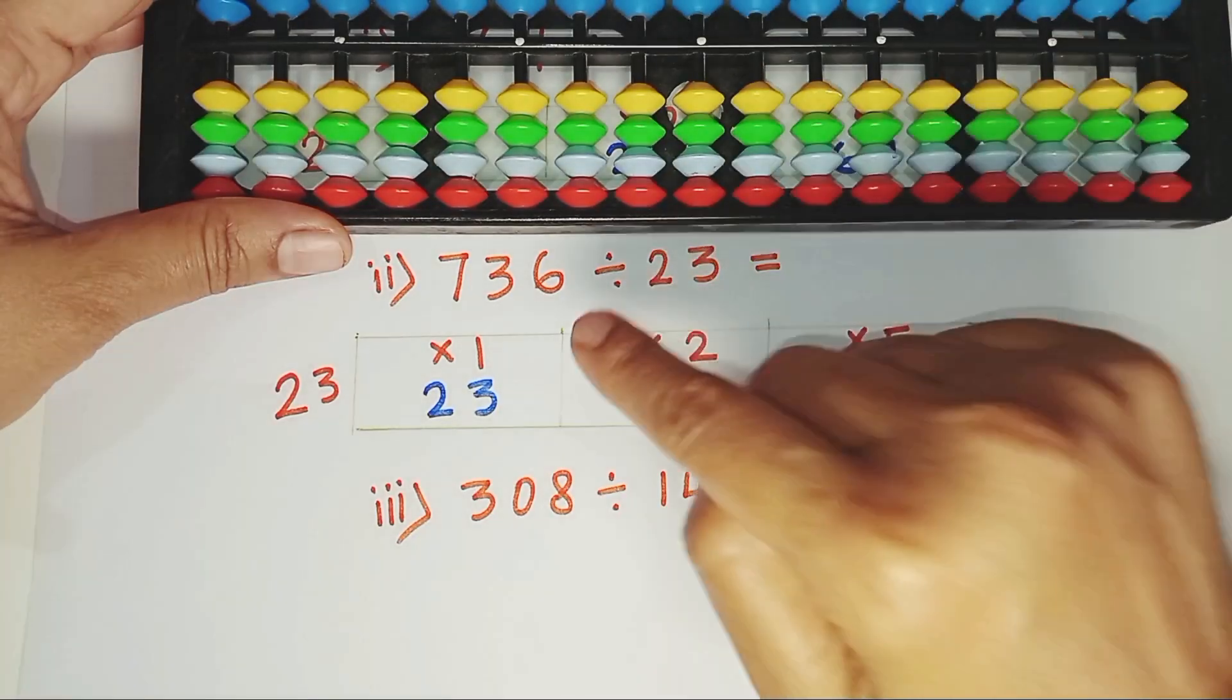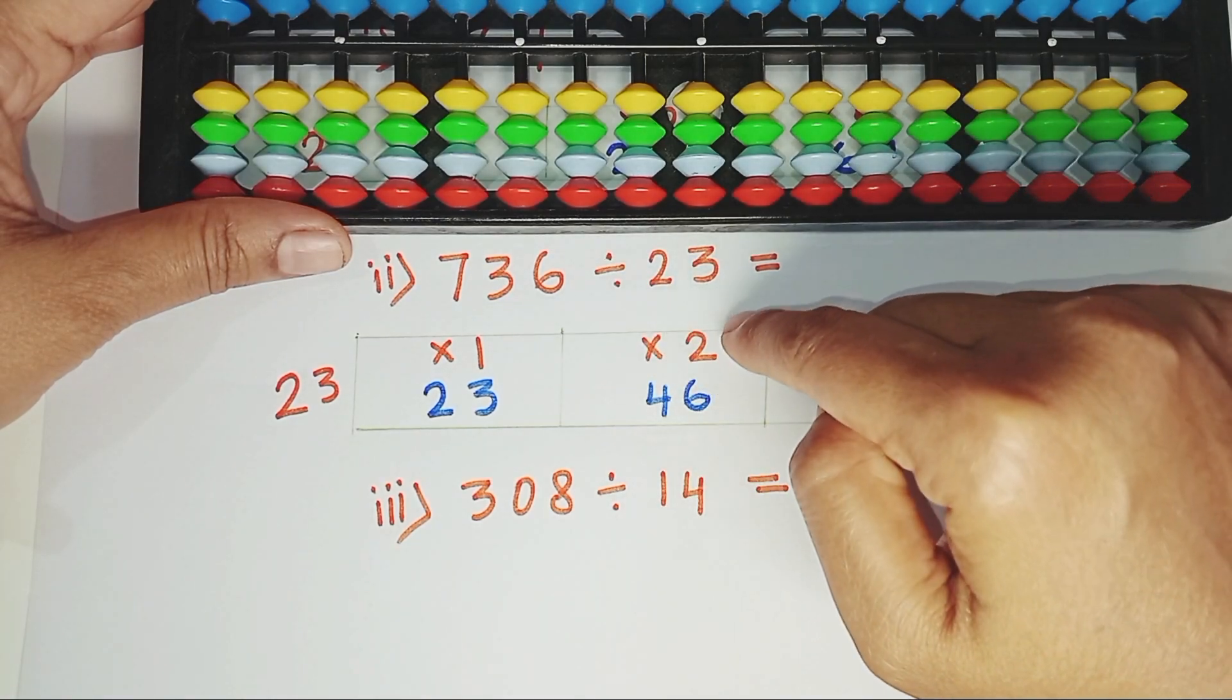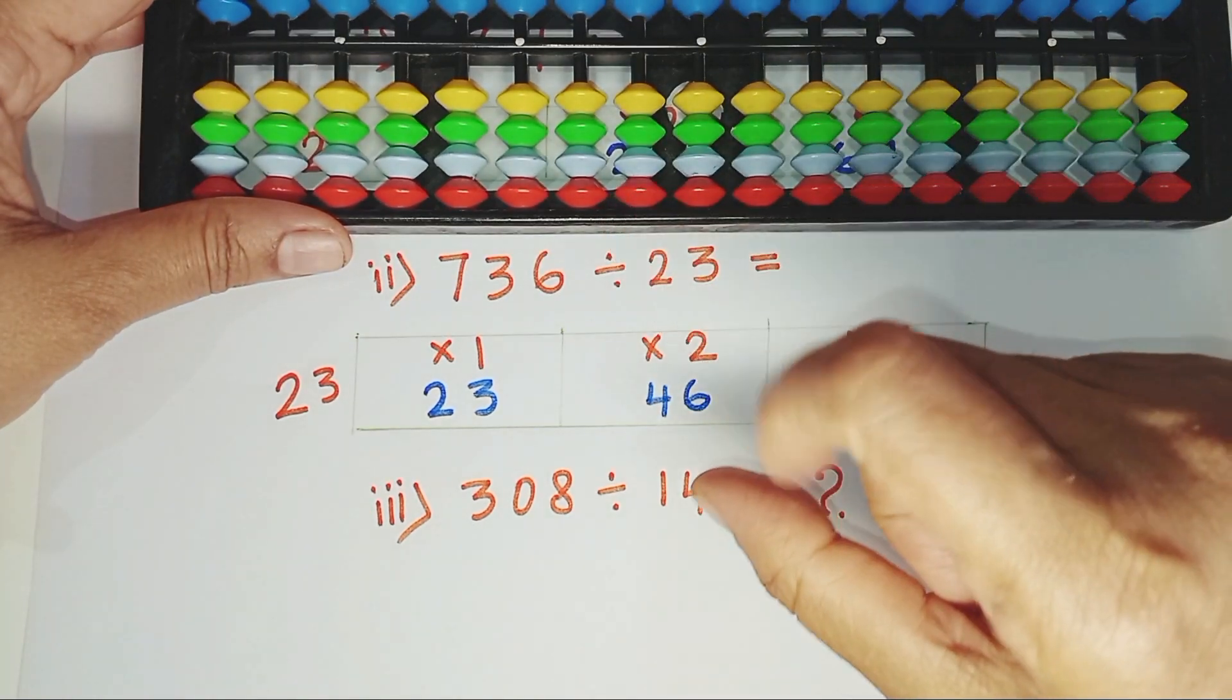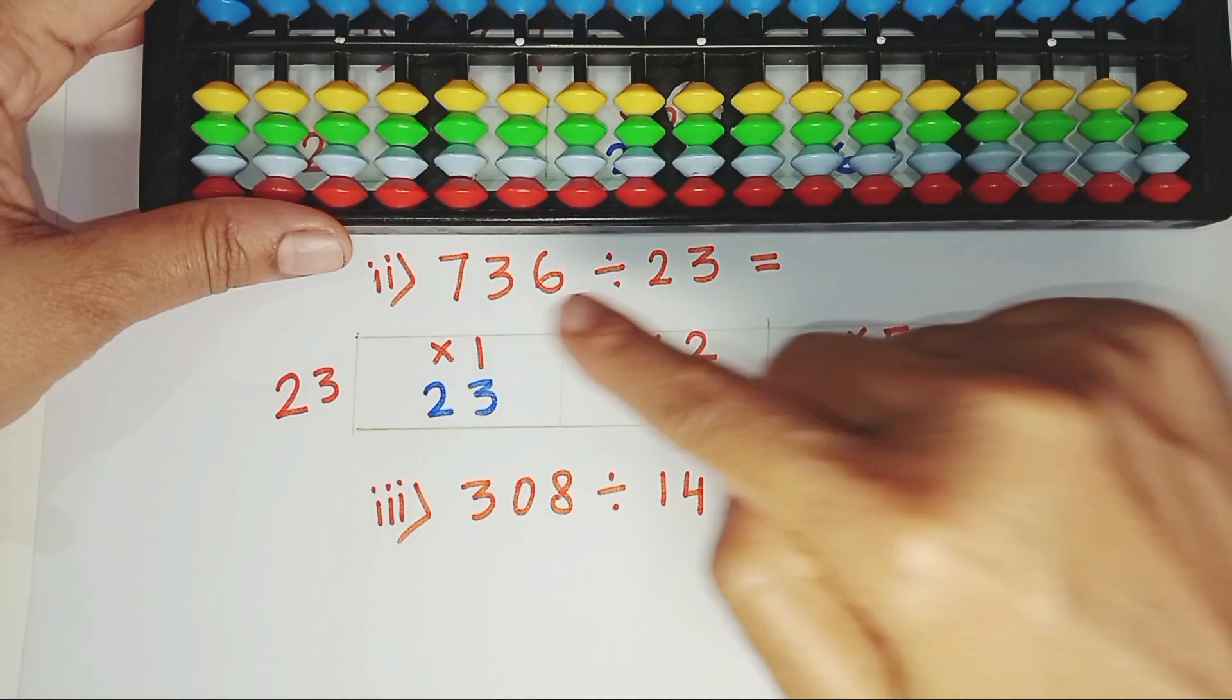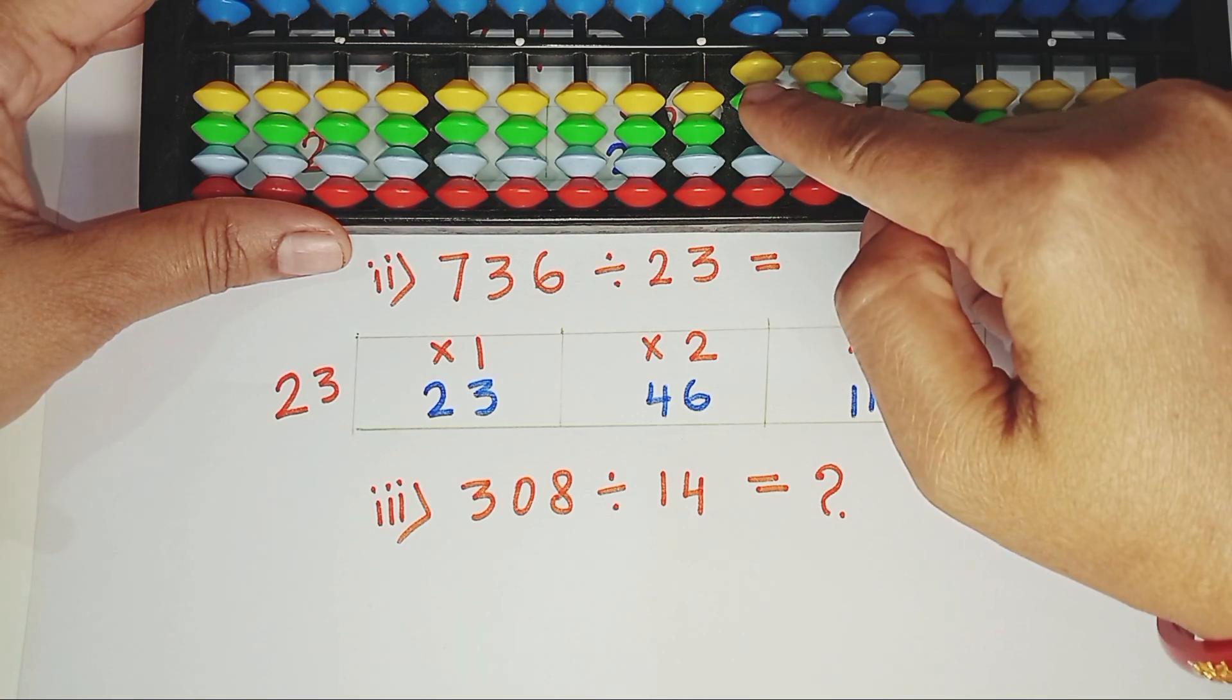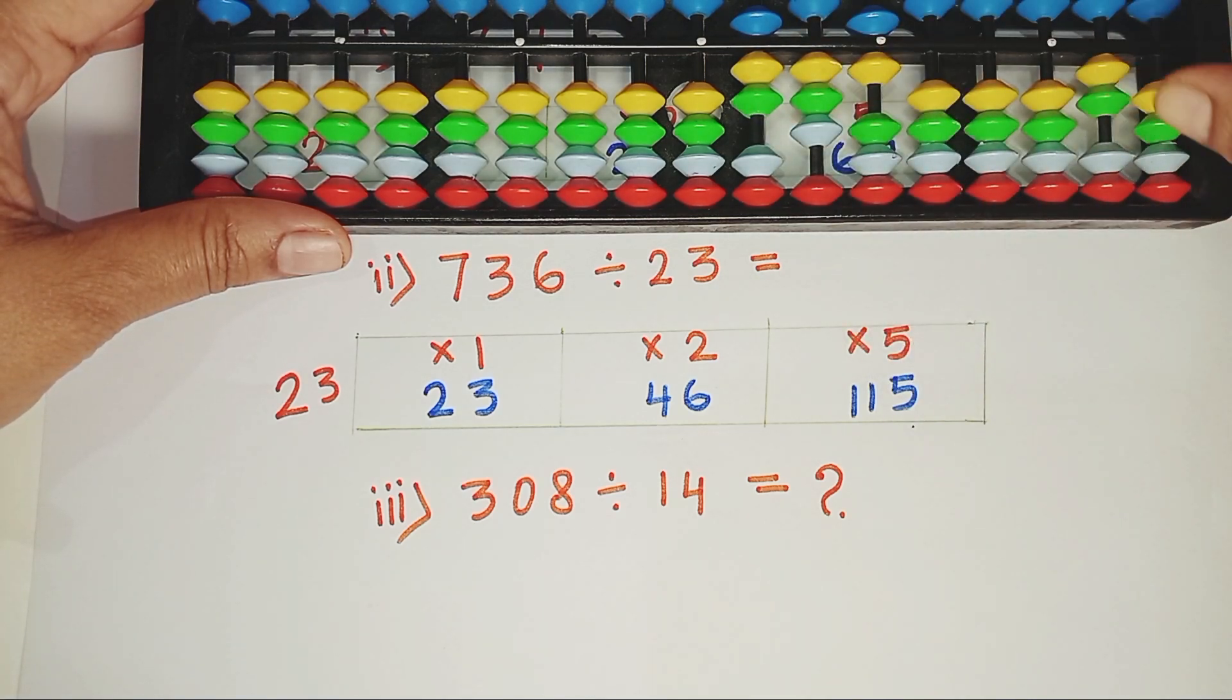Let's try another one. 736 divided by 23. The rule says number of digits in the dividend minus number of digits in the divisor minus 1. The answer is 0. So we will start placing the actual sum or the dividend from 0 rod.